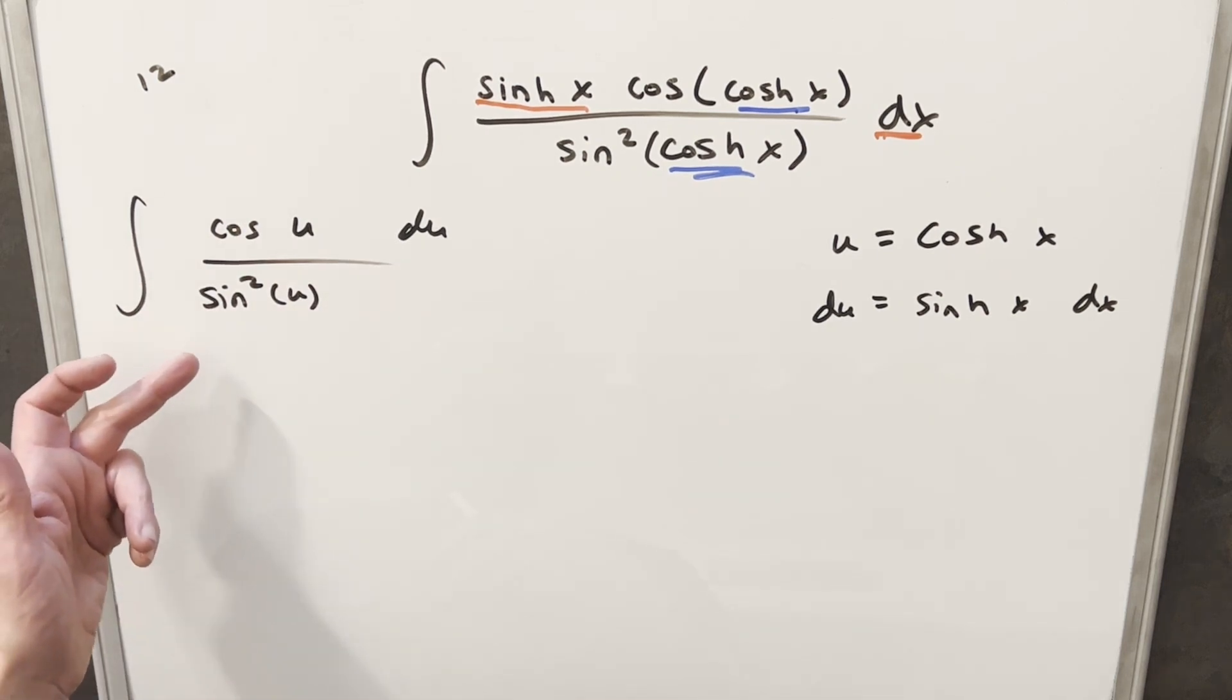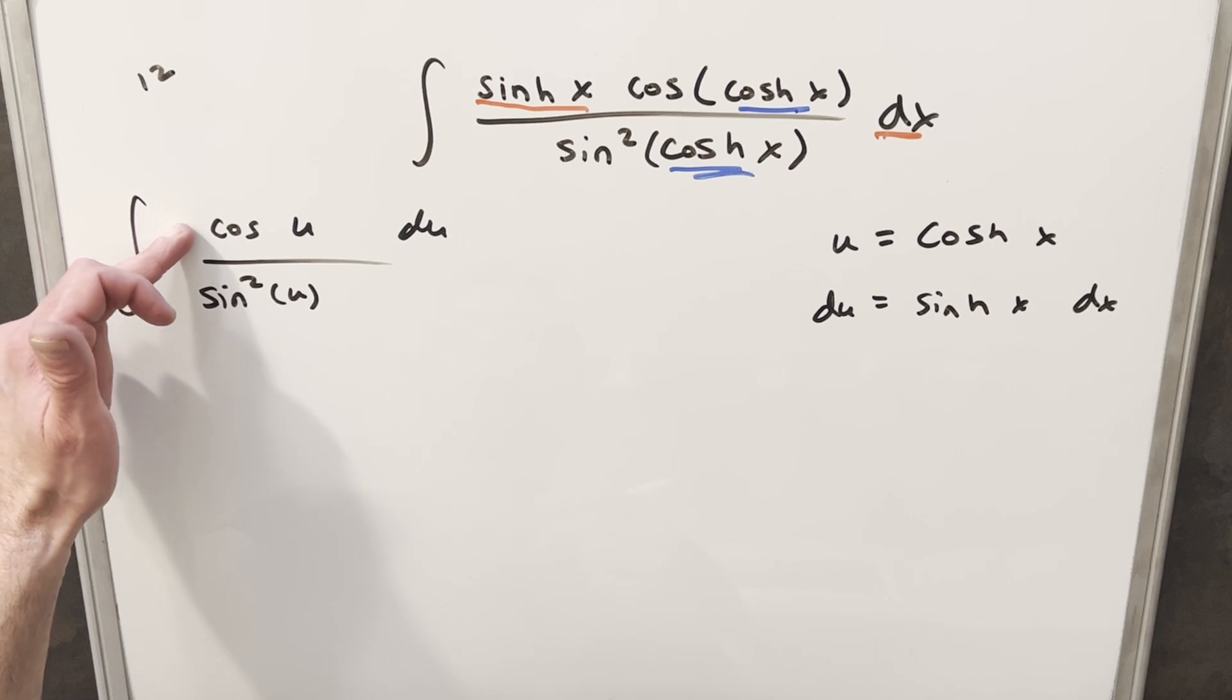But now for this integral, I could actually rewrite this as cotangent times cosecant and finish it that way. But I think instead what I want to do is another substitution, just because the derivative of sine is going to be cosine.